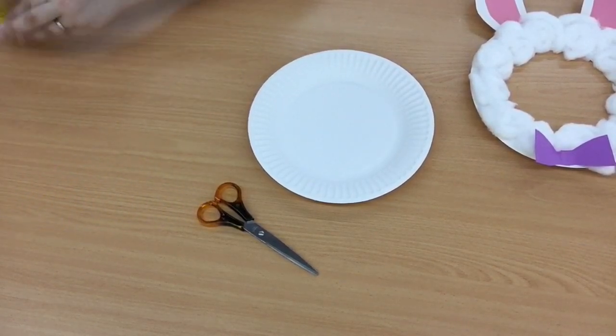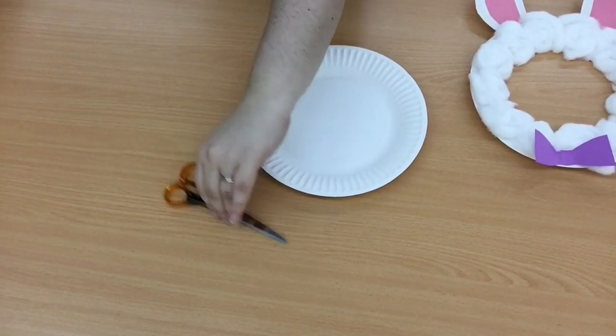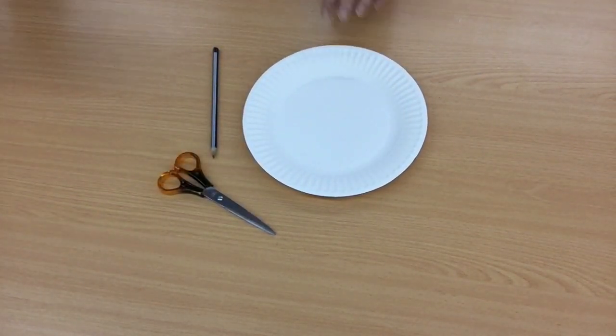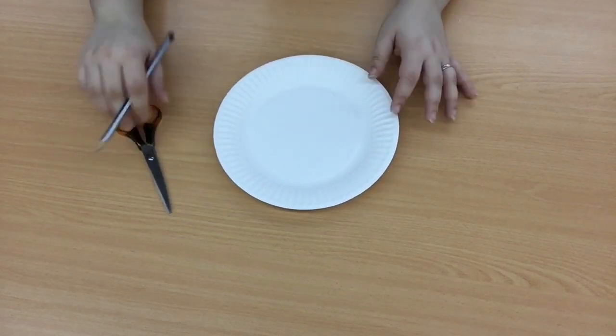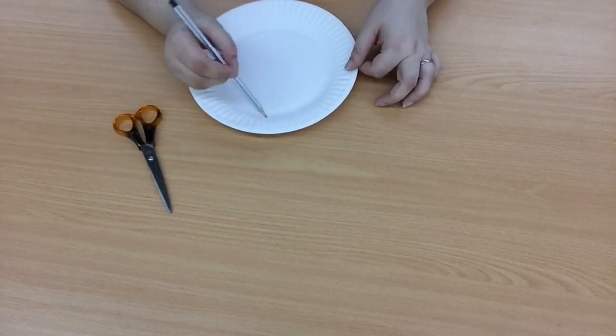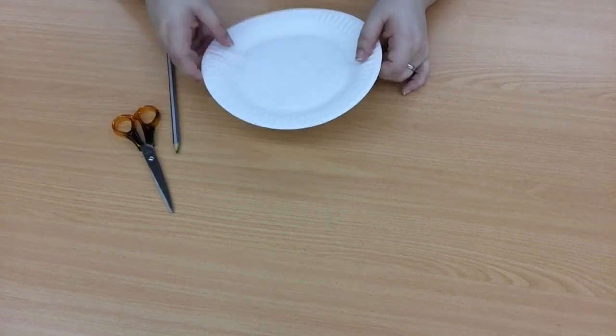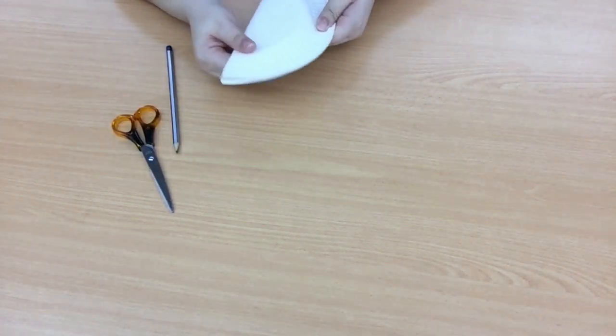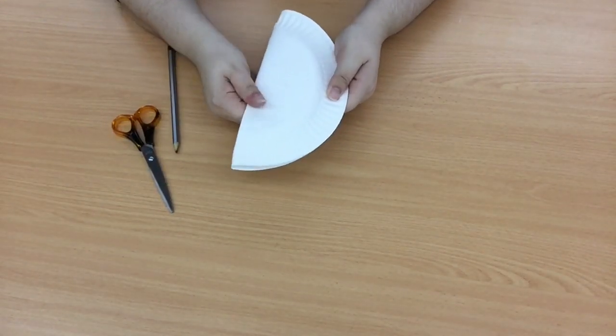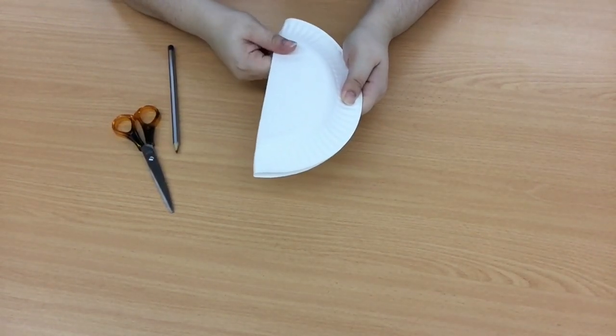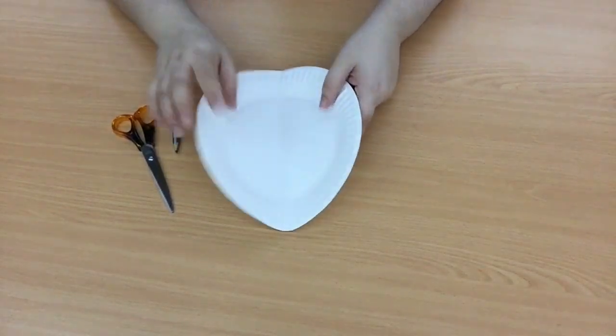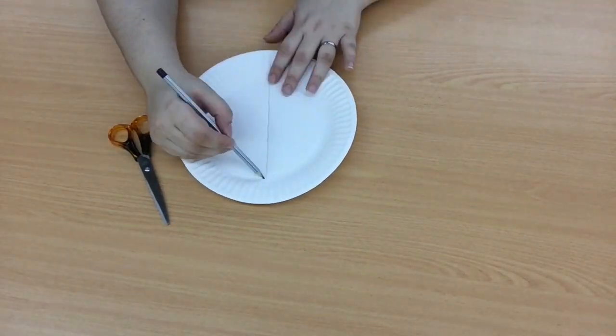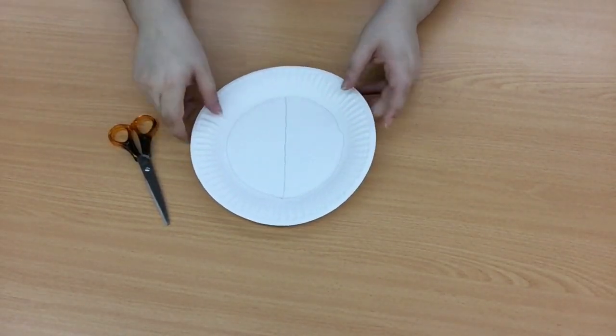So let's put aside everything we don't need just now. To begin with we're going to need a paper plate, pencil and scissors. We're going to start by folding our plate in half. Give it a nice good press.